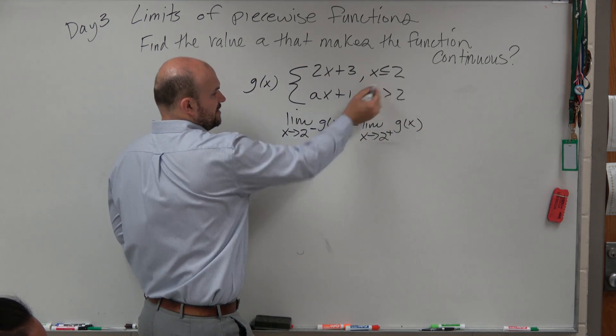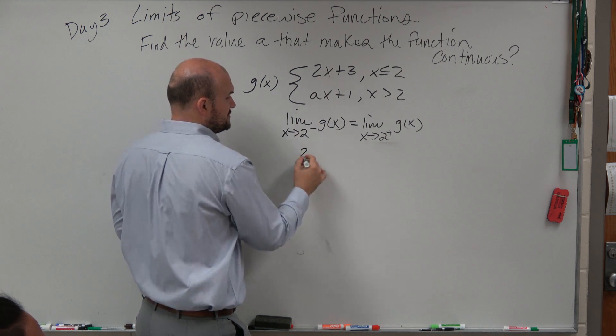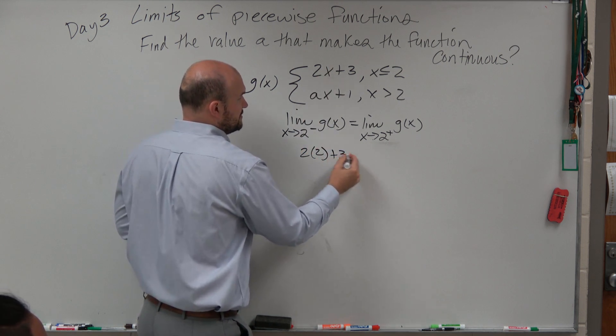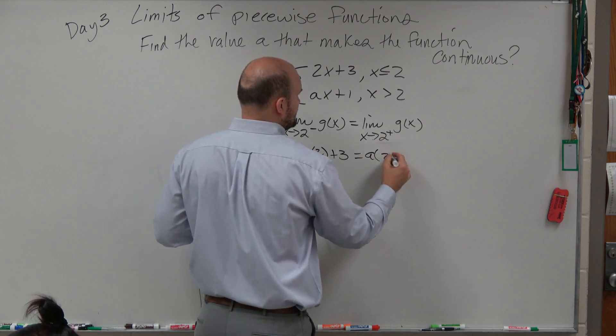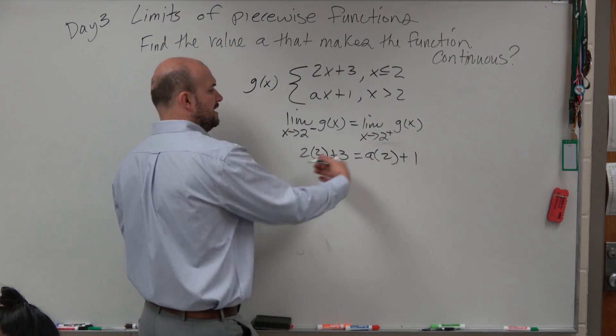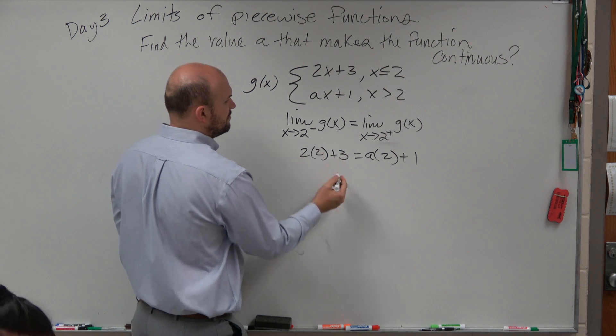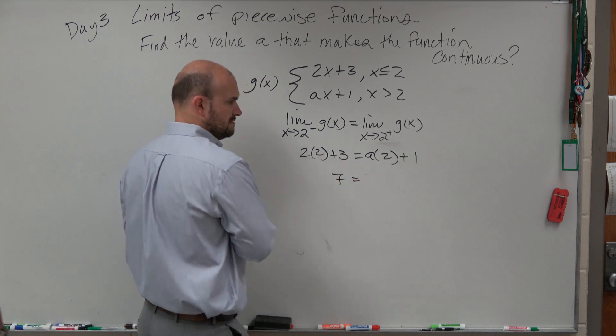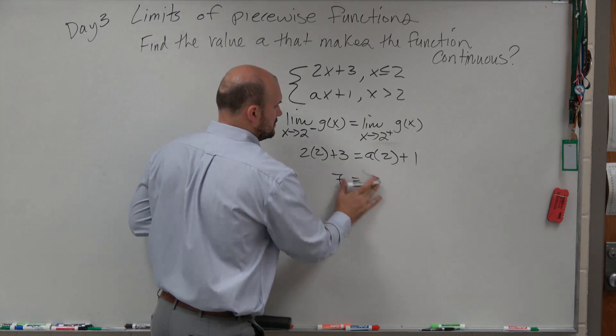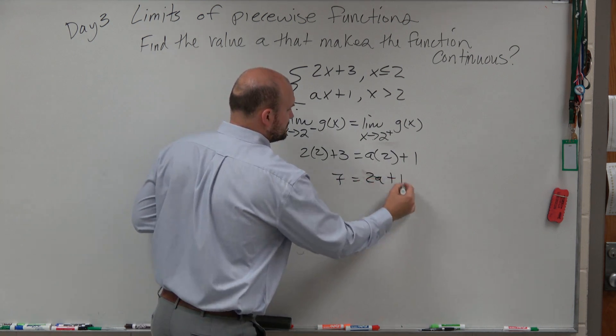So anyways, if we're evaluating the limit at 2 from the negative for this one, then we'd have 2 times 2 plus 3. So that has to equal a times 2 plus 1, and then we can simplify our work here, 4 plus 3, that's going to be 7 equals 2a plus 1.